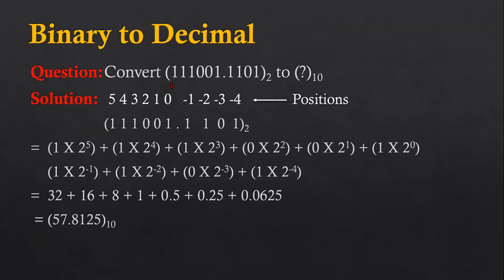First, I am going to convert a binary fractional number to decimal. Let's take the example 111001.1101, which is a binary number we need to convert into decimal. For the digits at the left-hand side of the decimal point, their positions are 0, 1, 2, 3, 4, 5. For the digits at the right-hand side of the decimal point, their positions are minus 1, minus 2, minus 3, and minus 4.